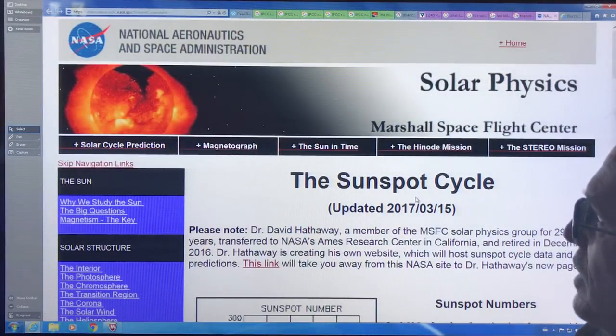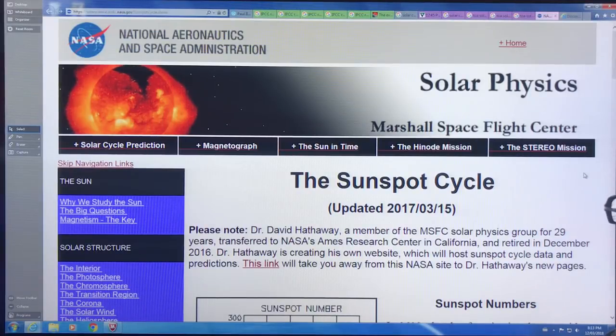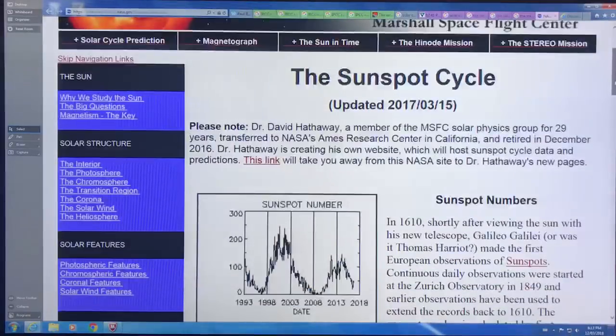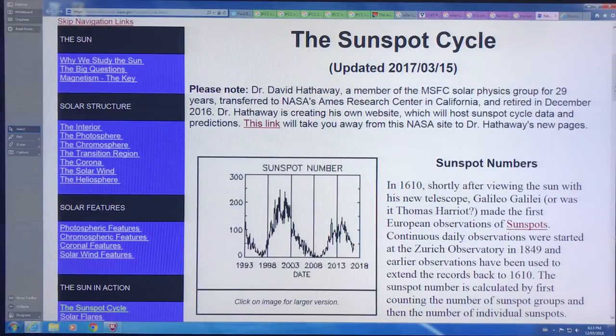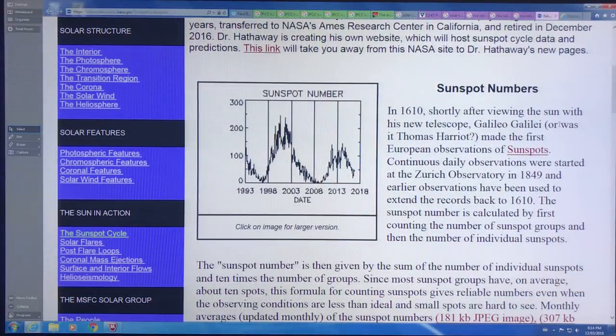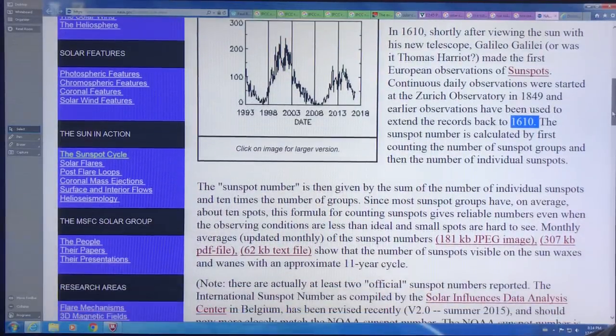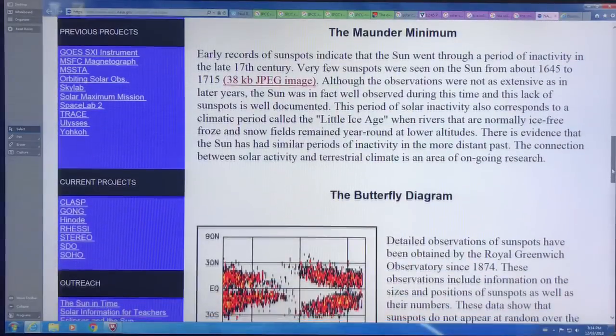This is a good site. This is a NASA site on the sunspot cycle. Updated March 15th, 2017. So this is a year ago. The guy who put stuff on this site, there's a separate link. He retired from NASA, but this is showing the same sort of stuff. It gives you a bit of history. Galileo Galilei 1610 invented the telescope, started looking at it with his telescope. One of the first things they started to do was counting sunspots. There's continuous observations at the Zurich observatory and so on, but there are some records going back to 1610. So you just count the number of groups, count the number of sunspots in each group.